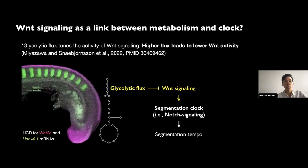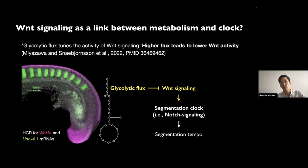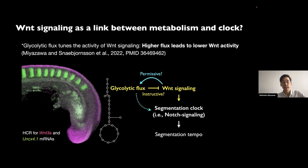I then explored the potential link between glycolysis and the segmentation clock, deciding to focus on Wnt signaling in particular, because I have recently shown that glycolytic flux tunes the activity of Wnt signaling — higher flux leads to lower Wnt activity while lower flux leads to higher Wnt activity. Wnt activity and clock tempo were both tunable by changing glycolytic flux, making Wnt signaling a good candidate connecting glycolysis and clock tempo. I also wanted to ask whether the role of metabolism is instructive or permissive.